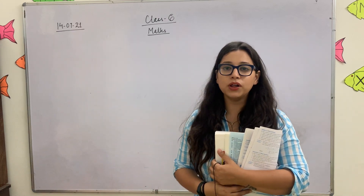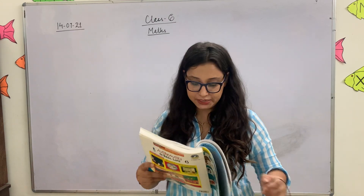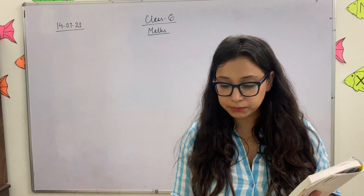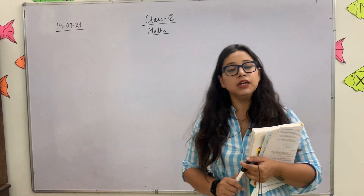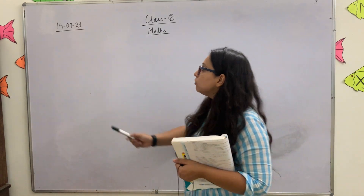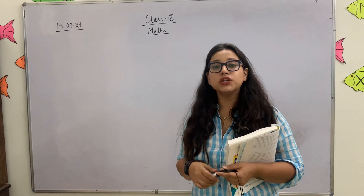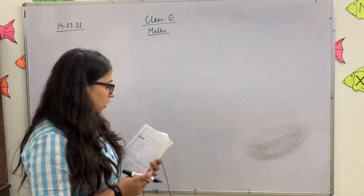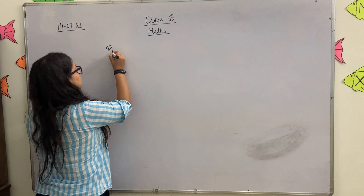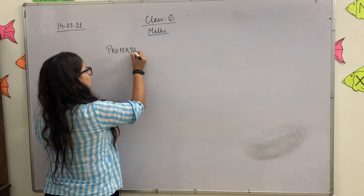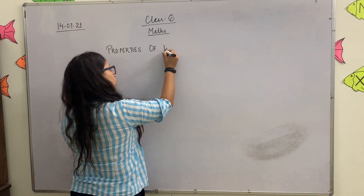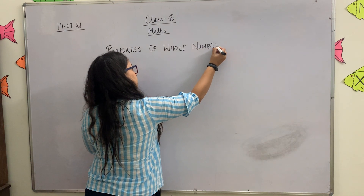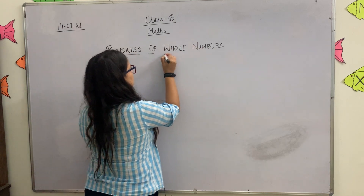Good morning, Class 6! As you all know, we have completed Exercise 2.1 in Maths. So today we are going to do Properties of Whole Numbers. First of all, take out your register, black gel pen, blue gel pen, and sketch color. Write down today's date with sketch color. Now write the heading 'Properties of Whole Numbers' with your sketch pen.